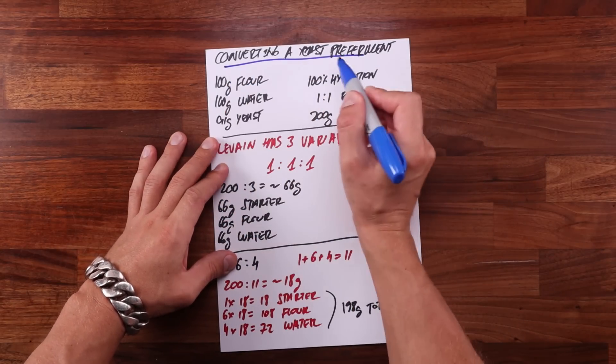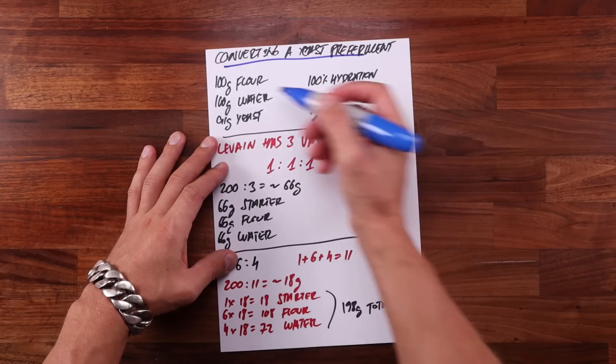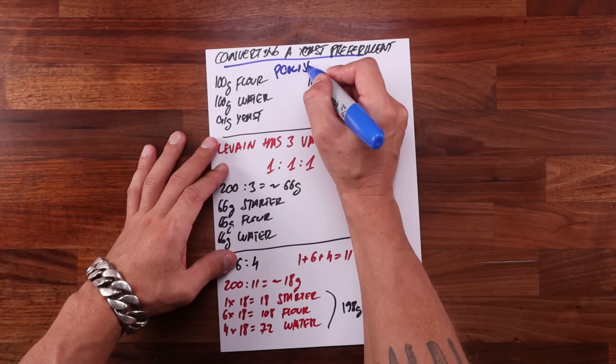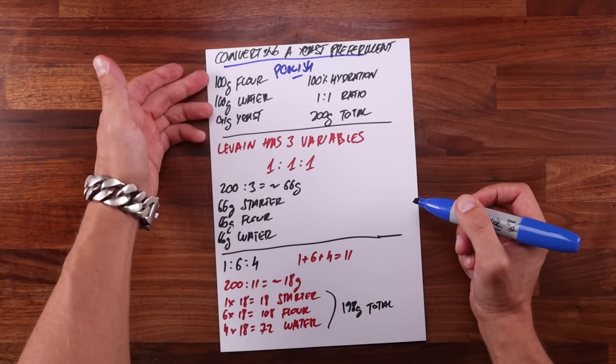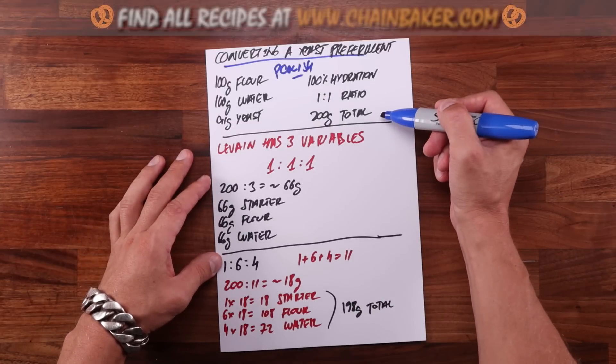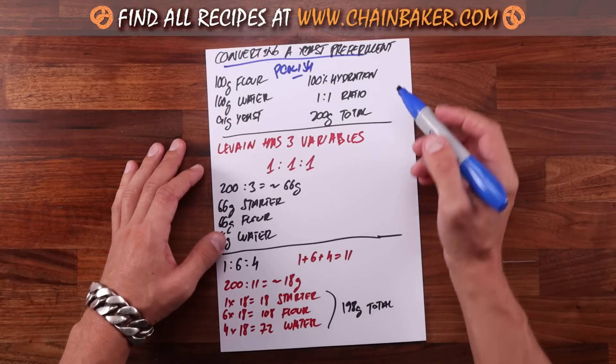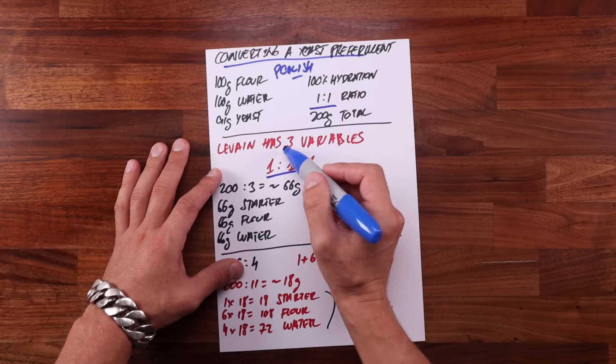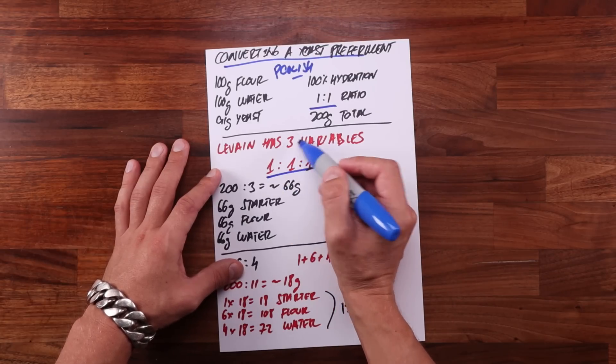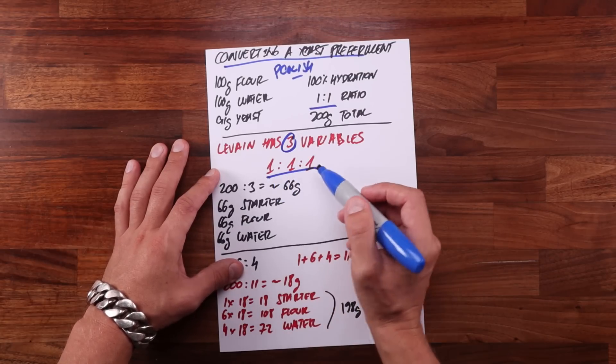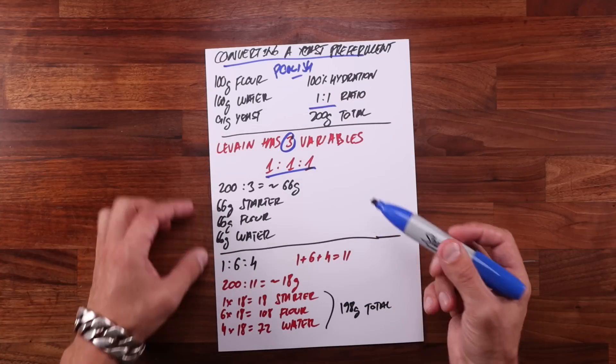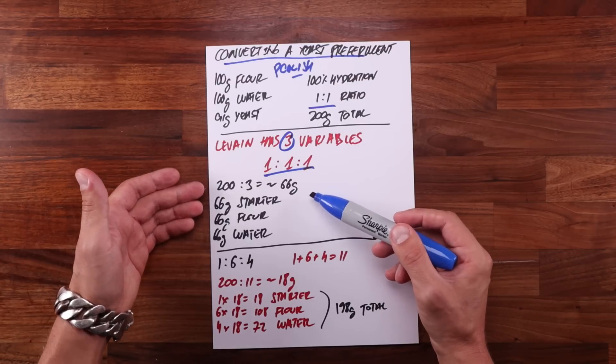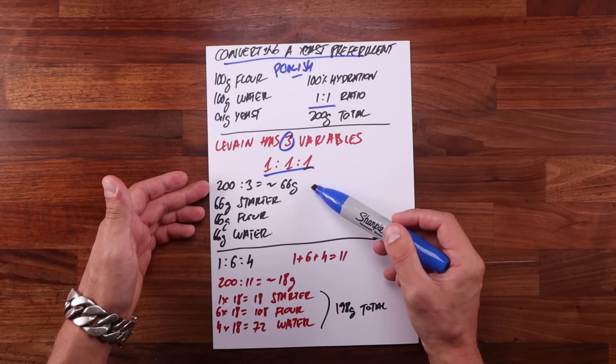And here's another example. Let's say we want to convert a yeast preferment to a sourdough one. The yeast preferment in question here is a poolish made with 100 grams of flour, 100 grams of water, 0.1 gram of yeast. So the hydration is 100%, the ratio is 1 to 1, and the total amount is 200 grams. It has two variables. Leaven has three variables. So for poolish that would be 1 to 1 to 1. Once again we add up the ratio values and then divide the total amount of preferment by that number. So 200 divided by 3 is about 66. And that's how many grams each of the ingredients will weigh.